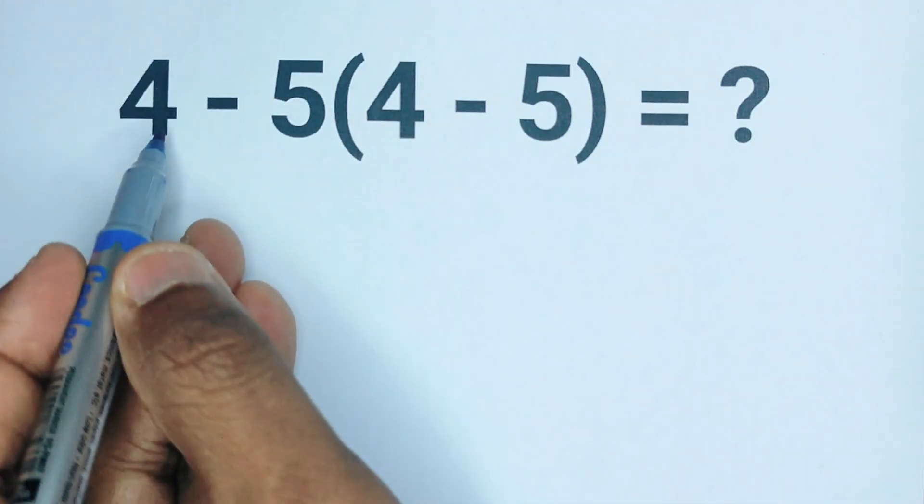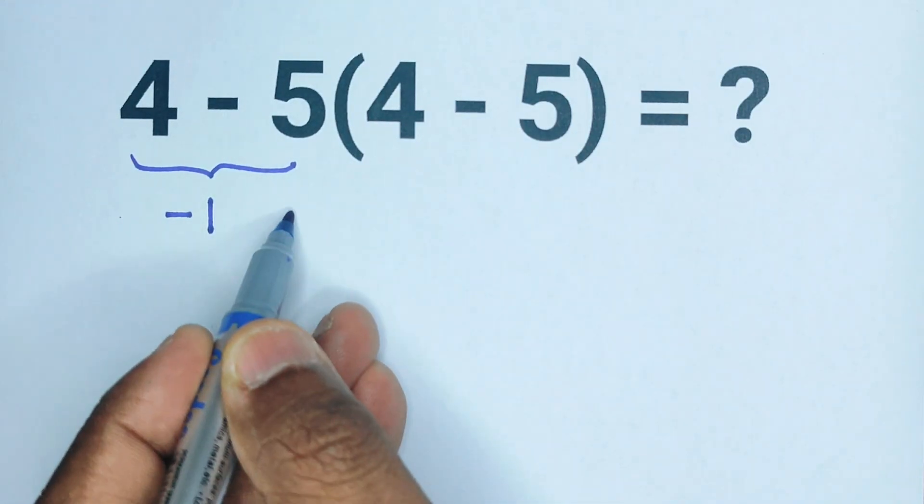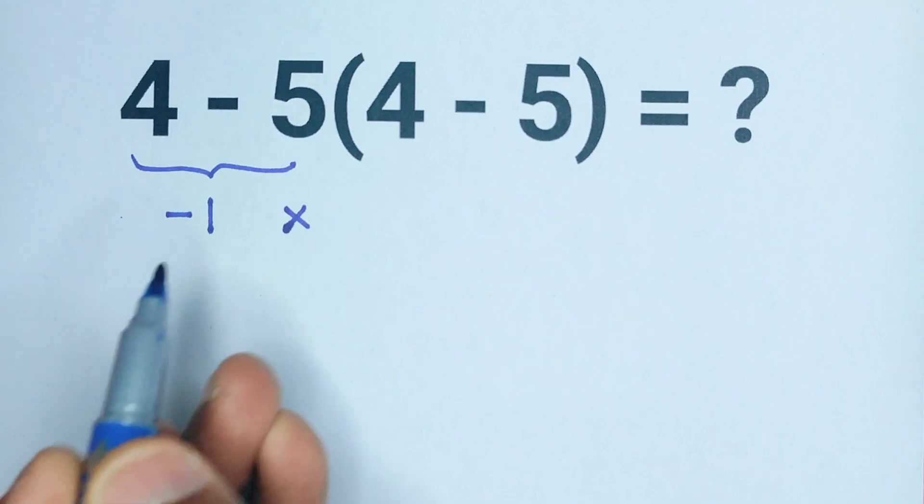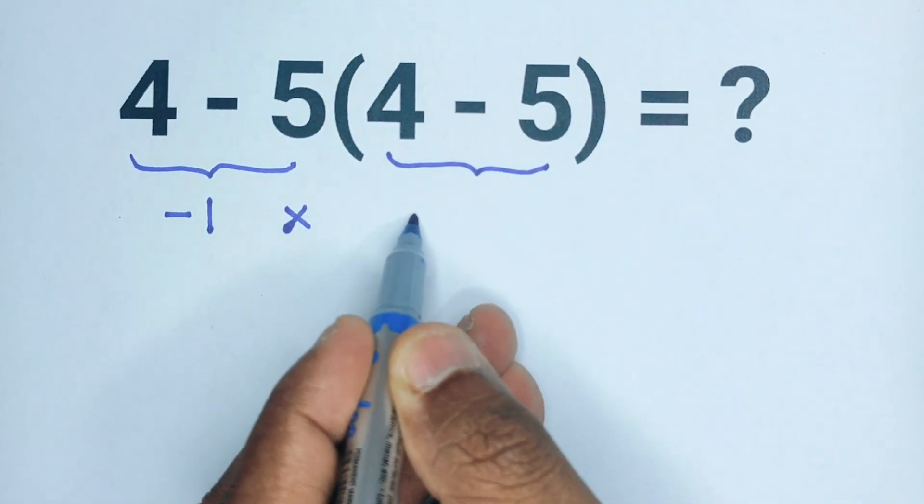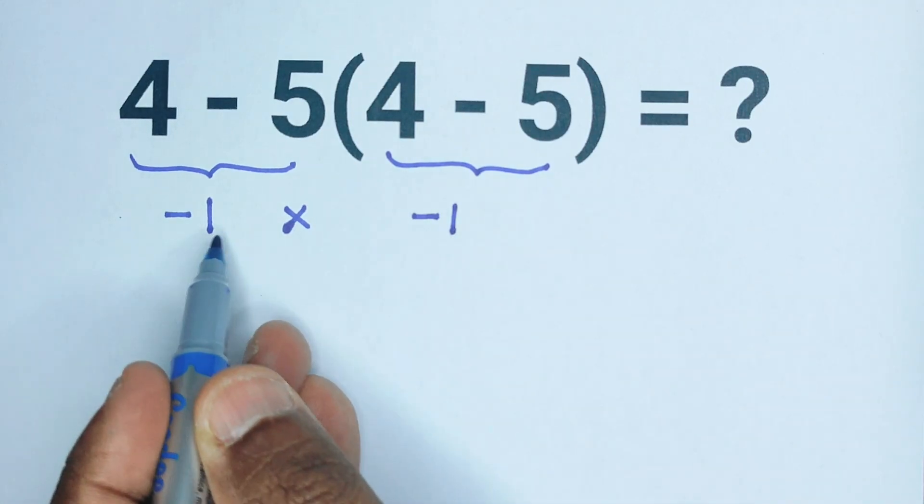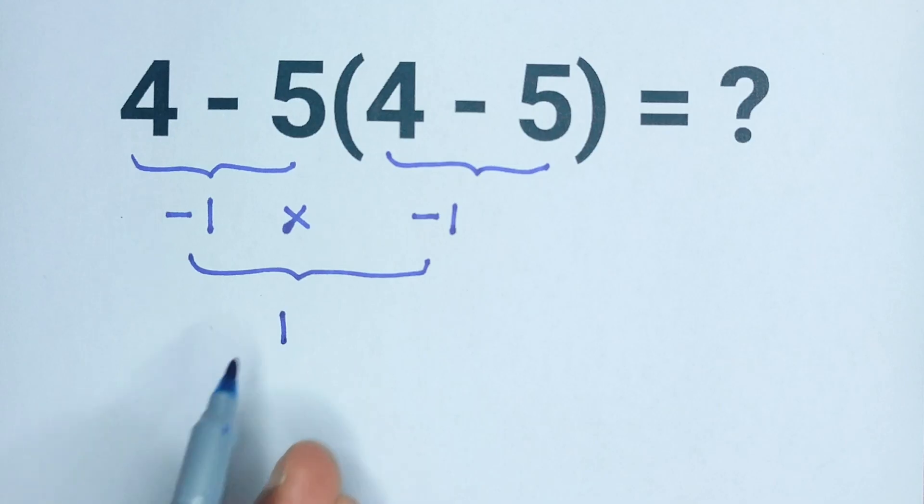So here 4 minus 5 equals negative 1, and we see parenthesis which means multiplication, and again 4 minus 5 which equals negative 1. So negative 1 times negative 1 equals 1, but this answer is not correct because we should follow the order of operations when solving expressions like this.